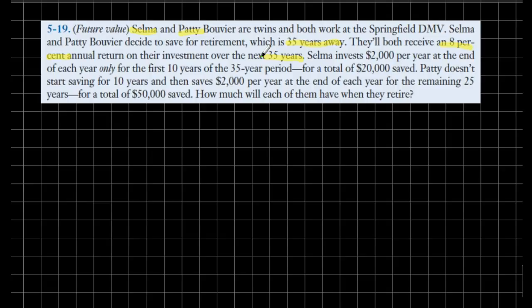Selma is actually pretty smart and decides she's worried about retirement very early in her career. She decides to invest $2,000 a year at the end of each year for the next 10 years only.